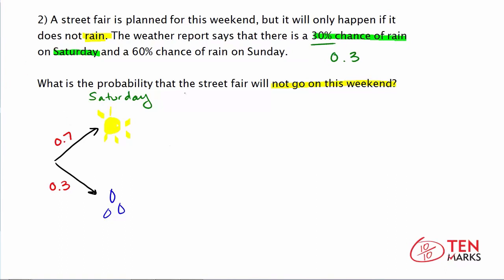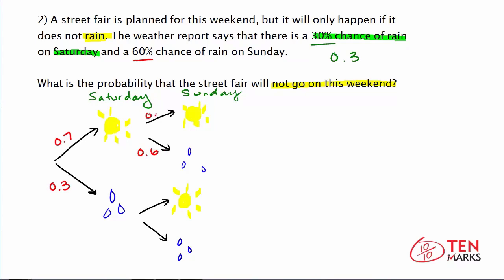Now we need to consider the next event, which is Sunday. So going out from here on Sunday, there are two options: sunny or rainy. The same options apply for the other branch below. There is a 60% chance of rain on Sunday, so we put 0.6 on the rain arrow, which means there's a 40% chance of it being sunny — 0.4. The same probabilities apply on the lower branch: 0.6 that it rains and 0.4 that it doesn't. Now we need to calculate the compound probability that it rains on both days — Saturday rains at 0.3, and then Sunday rains at 0.6.